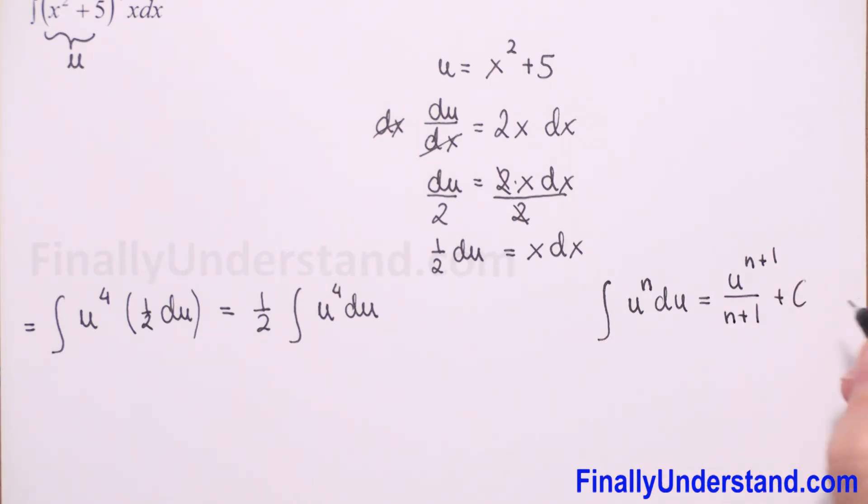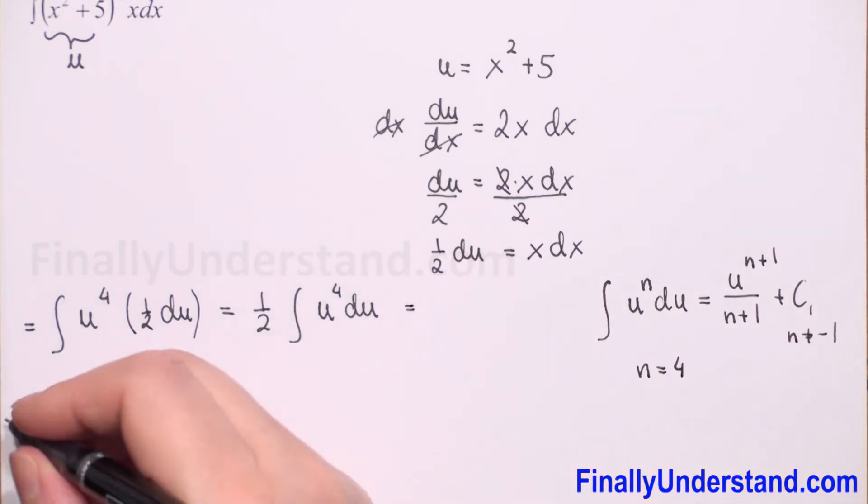This formula is for n different than negative 1. In this example, n equals 4, so now first we have to copy the constant.